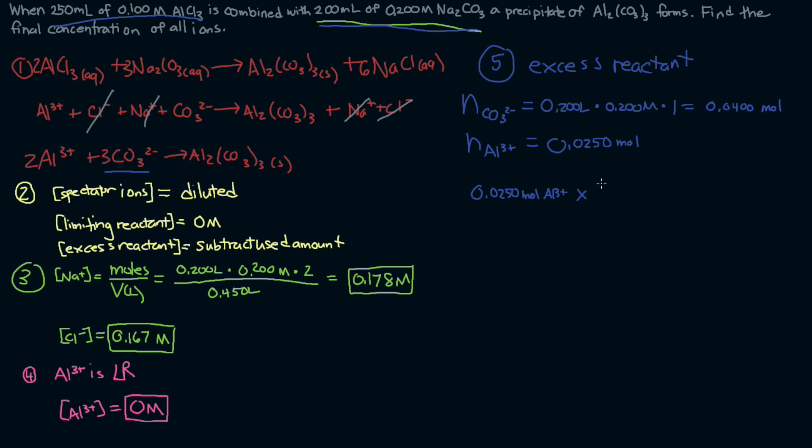We're going to multiply by, going back to our equation here, we have a ratio of 3 carbonates for every 2 aluminum. So 3 carbonates for every 2 aluminum ions, and that gives us 0.0375 moles of carbonate used.